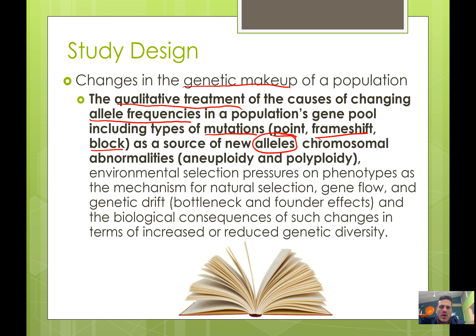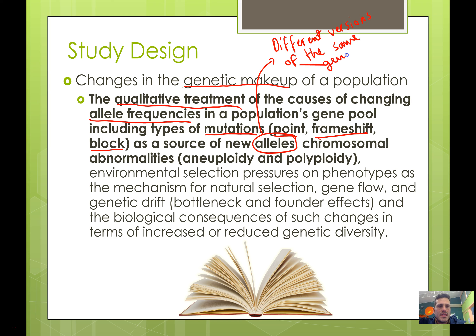Just quickly, if you don't remember from Year 10 science, alleles are different versions of the same gene. For example, the blue eye allele or the brown eye allele are two different versions of the eye colour gene. So these are a source of new alleles.